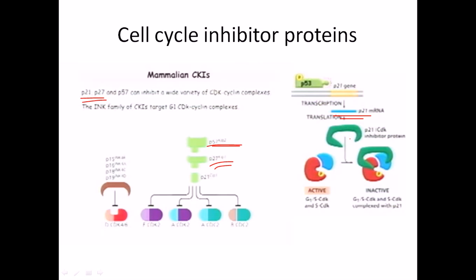p21 is a pocket-like protein — similar to retinoblastoma — which blocks the activity of E2F protein during the G1 phase of the cell cycle. p21 eventually attaches with cyclin and CDK proteins like S-CDK, cyclin B, or cyclin E. It attaches to CDK proteins and blocks them from becoming active. In normal situations CDK proteins are active, but high accumulation of p21 will bind to the active site of cyclin-dependent kinases.